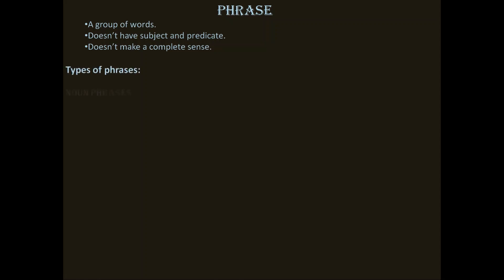Types of phrases. The first one is Noun phrases. For example: 'The cute baby pronounced his name.' Here, 'the cute baby' is a group of words and separately it doesn't give complete sense, so this is a phrase. And what work does this phrase do here? It does the work of a noun. That's why it is a noun phrase.